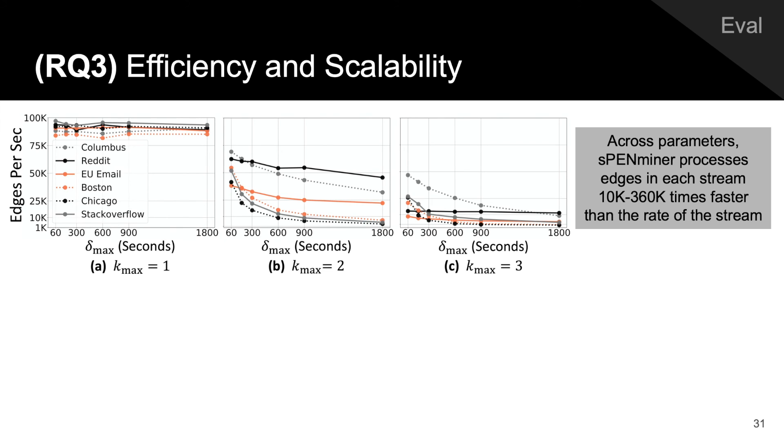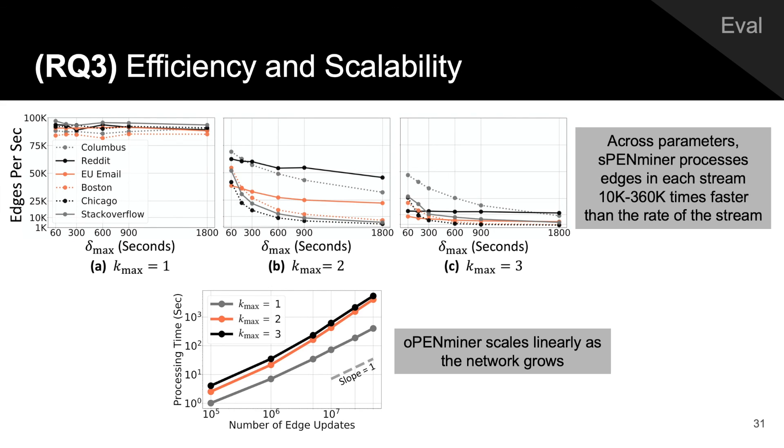In addition to finding interesting activity in networks and showing promise for anomaly detection, over various parameter settings, S-PenMiner processes edges in each stream 10,000 to 360,000 times faster than the rate of the corresponding stream, and O-PenMiner scales linearly with the size of an evolving network.